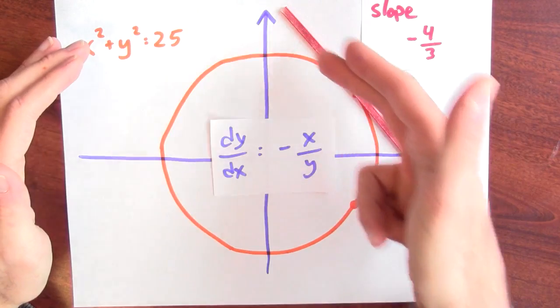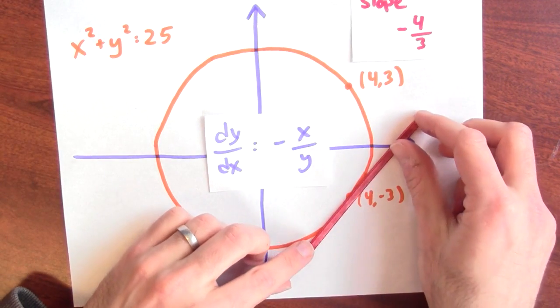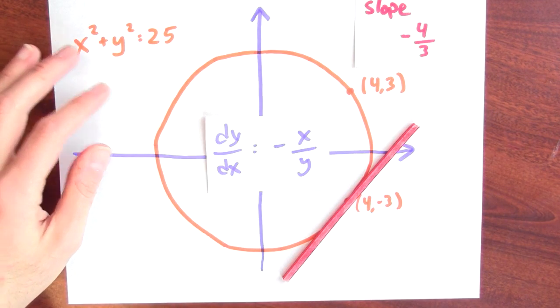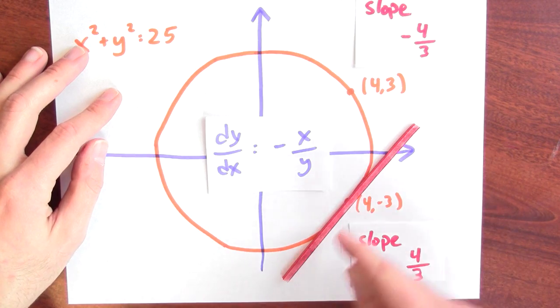And yeah, that line is going down. The slope's negative. What's the slope of the tangent line to the curve at the point 4, negative 3? Same equation tells us that the slope there is 4 thirds. And yeah, this line's going up.